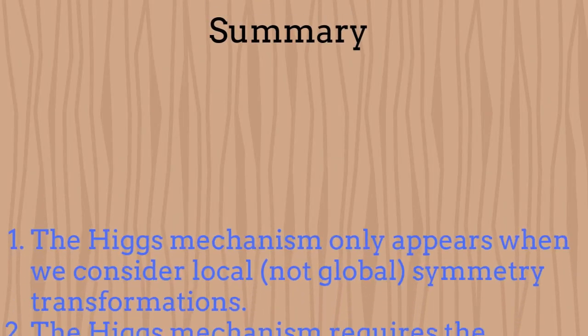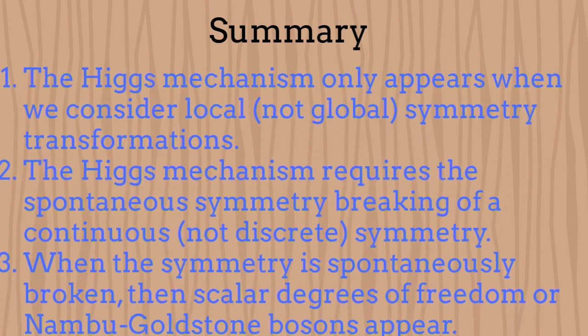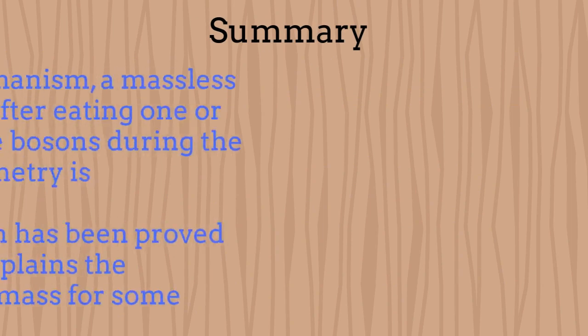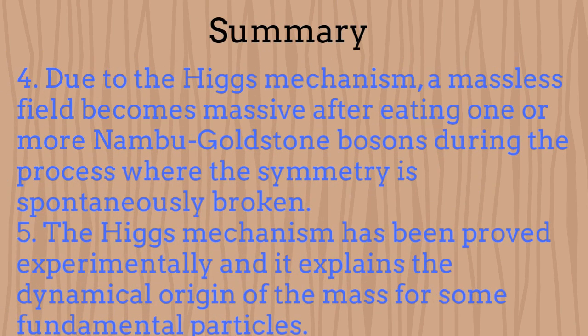In summary, the Higgs Mechanism only appears when we consider local continuous symmetries which are spontaneously broken inside some specific system. When this occurs, Nambu-Goldstone bosons moving along all the possible vacuums appear. The Nambu-Goldstone bosons are then subsequently eaten by some massless fields, which become massive after this process occurs. When this happens, one single final vacuum state is selected arbitrarily. Finally, the Higgs Mechanism has been proved experimentally, and it explains the dynamical origin of the mass for some fundamental particles.